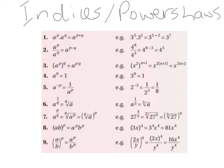Law 5: A to the power of minus P gives us 1 over A to the power of positive P. An example: 2 to the power of minus 3 becomes 1 over 2 to the power of positive 3. And 2 to the power of 3 gives us 8, so 1 over 8 is our answer.